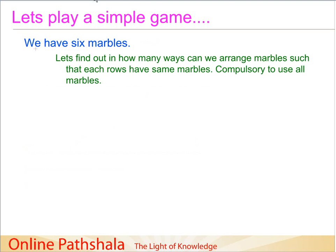Before we go into the discussion of factors, let us play a simple game. Let's say we have six marbles, and we want to find the different ways to arrange them such that each row has the same number of marbles. It is compulsory to use all the marbles — none should be left out.